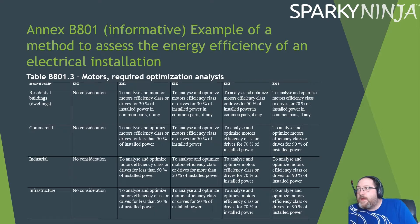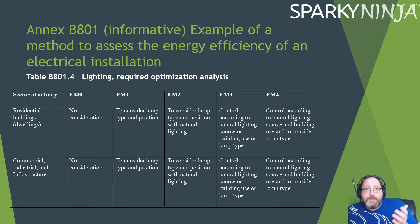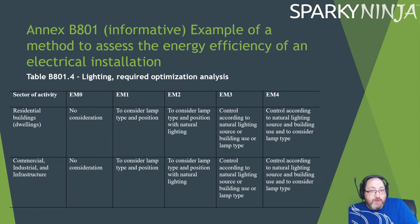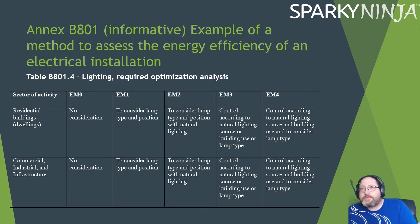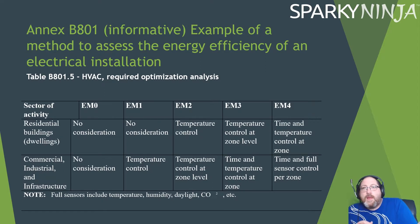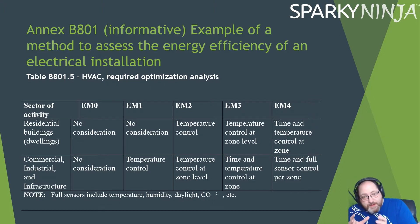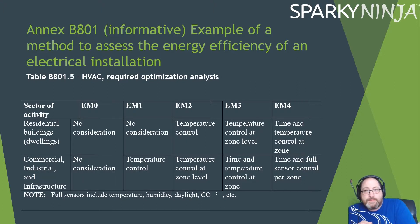For lighting requiring optimization and analysis: no consideration gets zero, and controlling according to natural lighting source, building use, and lamp type gets a four. For HVAC requiring optimization and analysis: no consideration is zero; time and temperature control broken down into independent individual zones gets a four. For industrial and commercial, sensor control per zone is also included at level four.